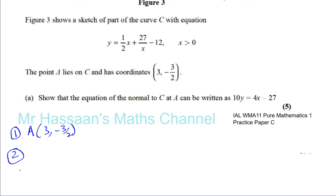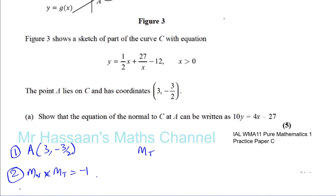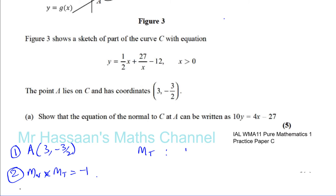The gradient of the normal, when multiplied by the gradient of the tangent, equals minus one. The tangent has the same gradient as the curve at that point. So let's find the gradient function for the curve. We rewrite y as one-half x plus 27x to the power of minus one, minus 12.